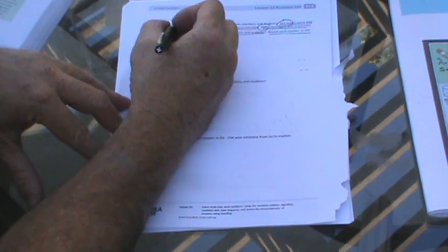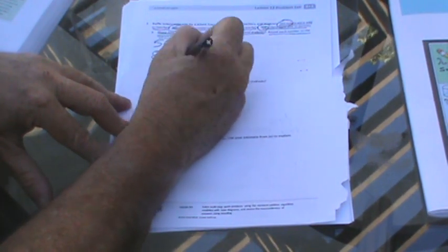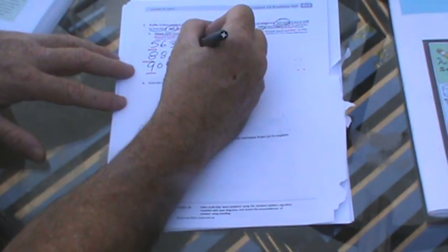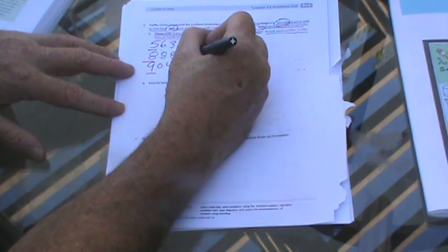563 tickets were sold to teachers, 880 more tickets were sold to students than to teachers, and 904 tickets were sold to parents. Let's circle these numbers. It says, about how many tickets were sold? Round each number to the nearest hundred to find your answer.